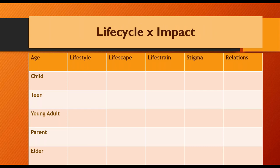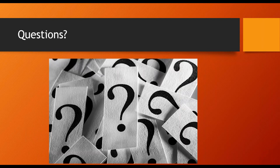Finally, looking at life cycle, in every situation one finds differential impacts. One has to look at children and teenagers, young adults, parents, and elders differently because they're likely to be impacted quite differently. That's a quick run-through of theory.